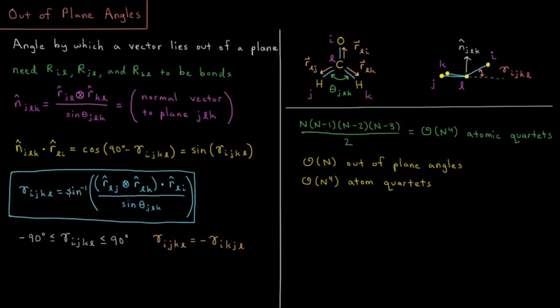That's the return argument of an arc sine, so the range is going to be from positive 90 degrees down to negative 90 degrees. There is a symmetry there where gamma ijkl, if you switch which one of these is j and which one is k, then this normal vector is going to flip down to the other side. It's going to flip its sign, so the angle is going to flip its sign as well. So gamma ijkl equals negative gamma ikjl.